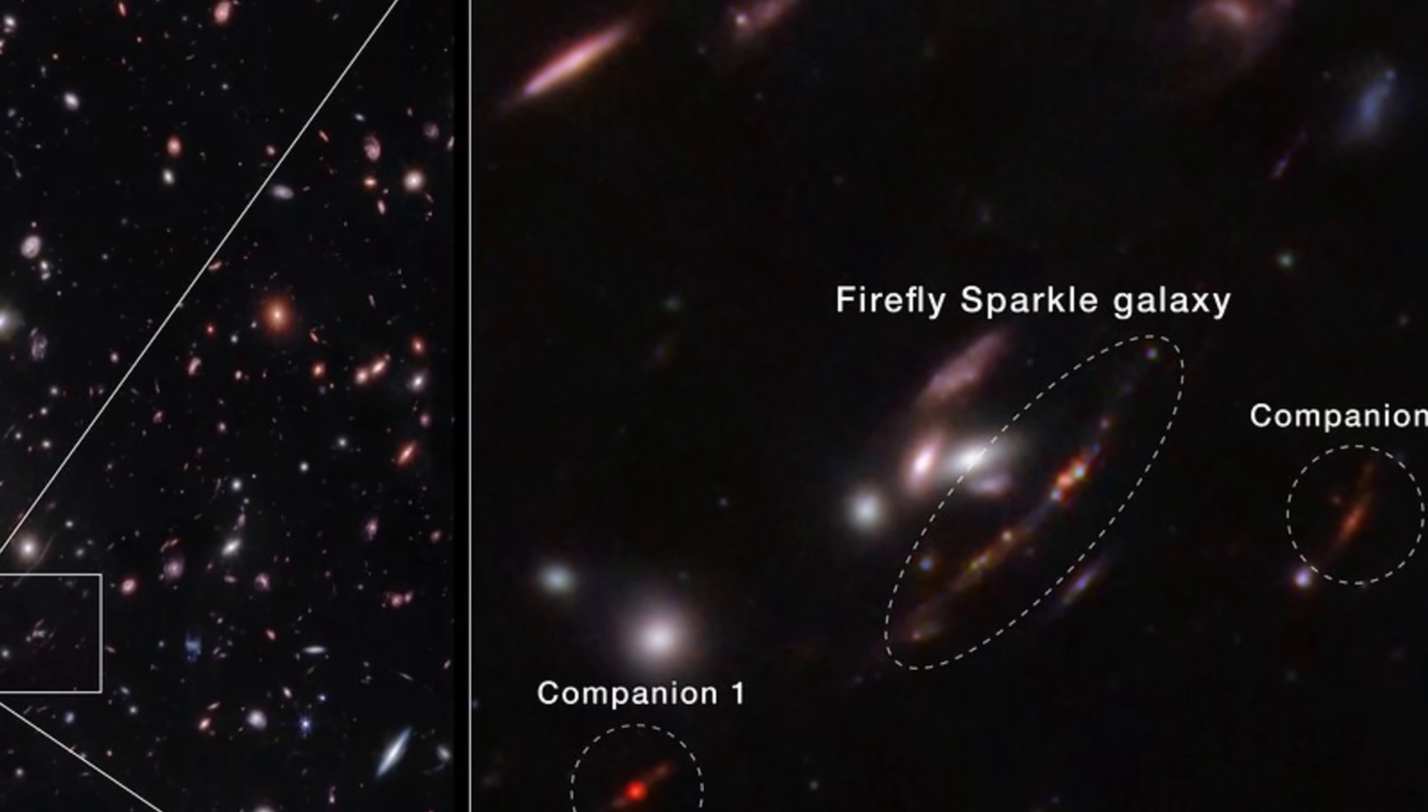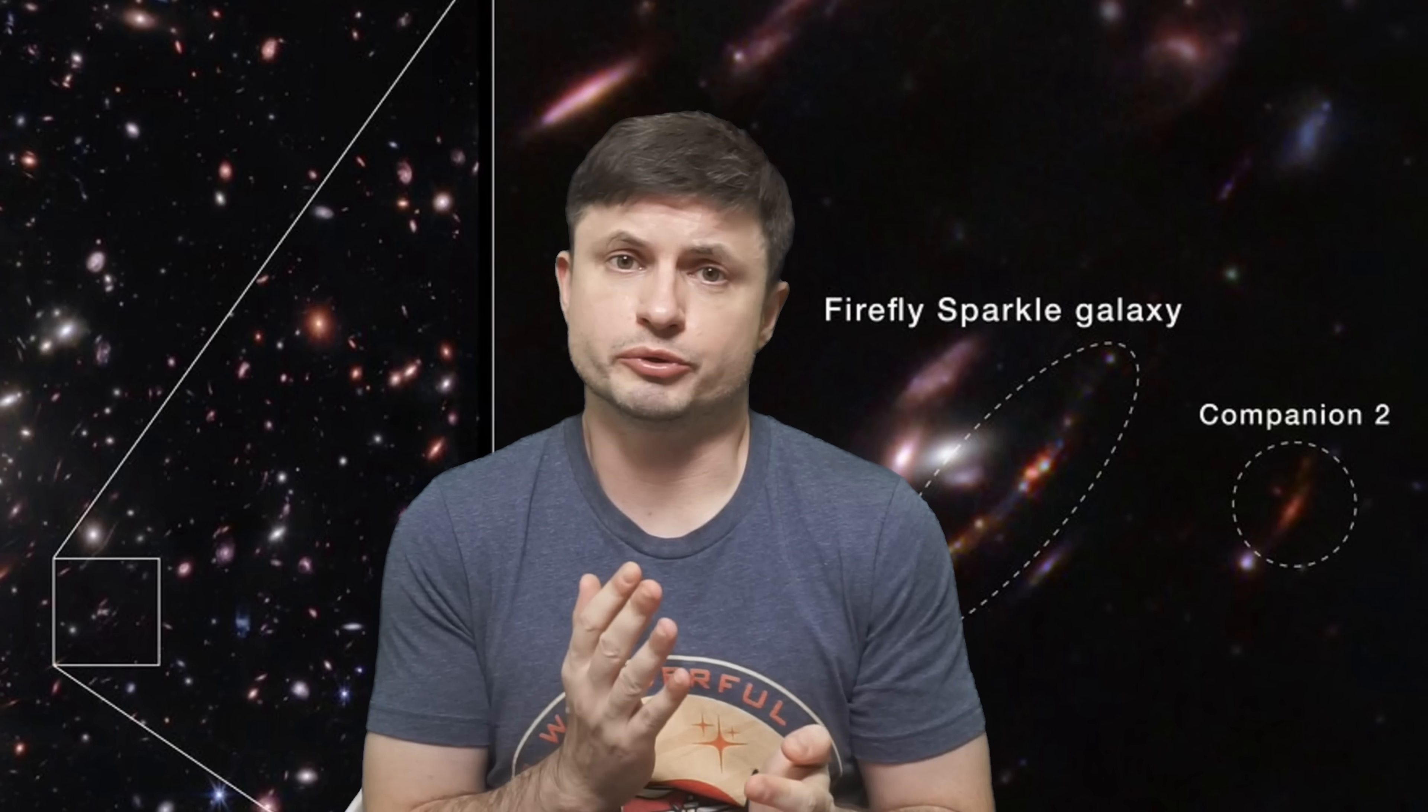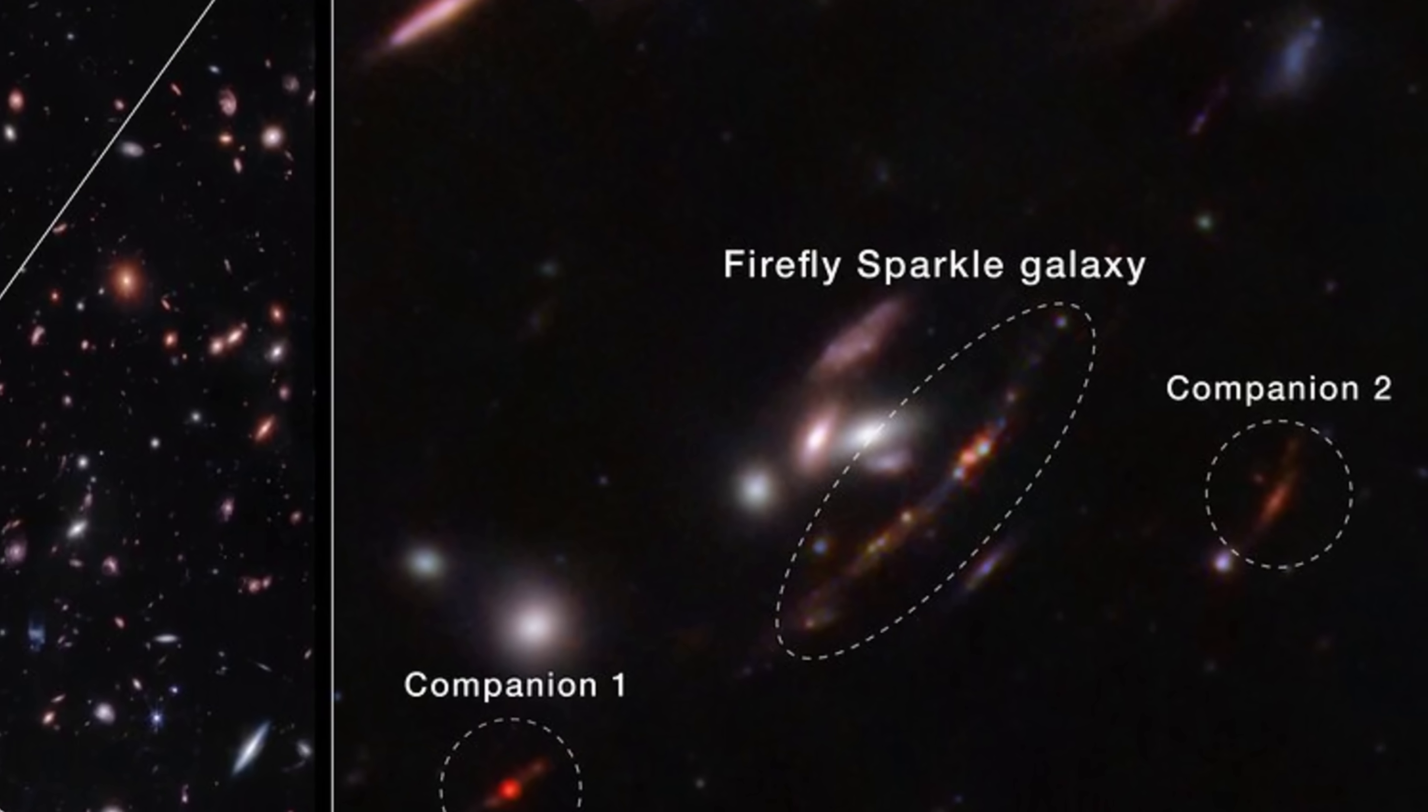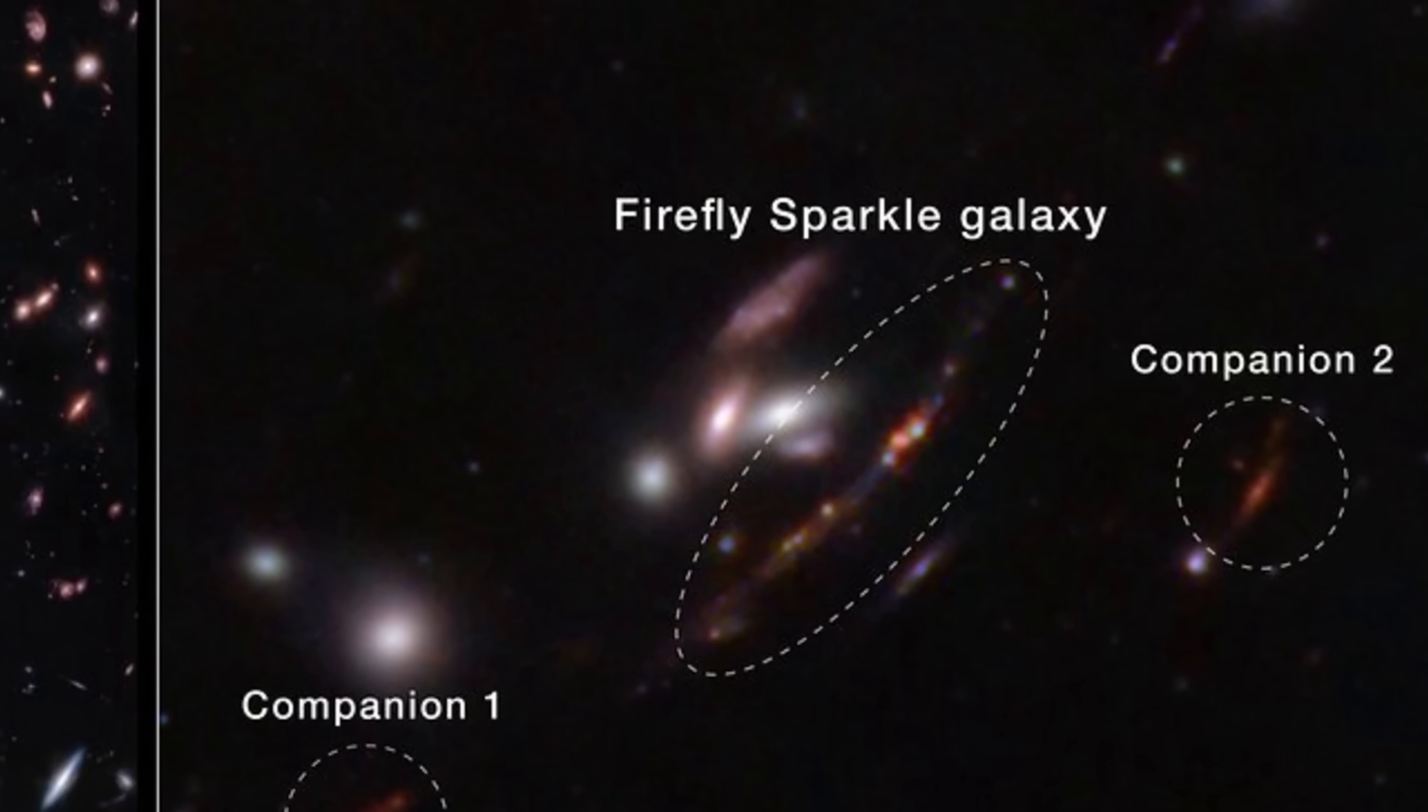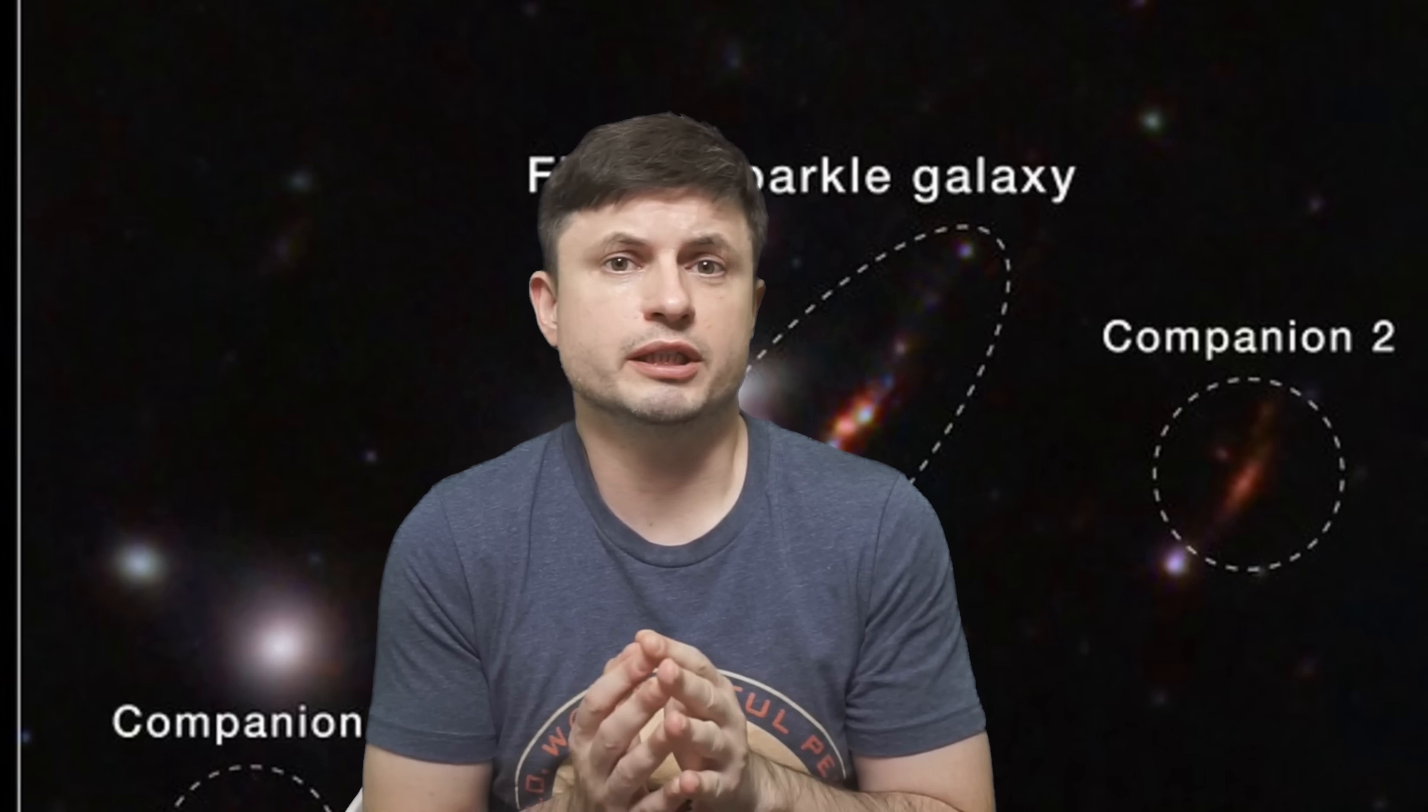But what makes this unusual galaxy, now referred to as the Firefly Sparkle, kind of exciting is the fact that this is the first time in history that we're able to observe individual tiny galactic parts as this early galaxy is being assembled. This allows astronomers to essentially reconstruct the overall shape of this galaxy, discovering individual differences in various parts and helping us visualize a galaxy that turns out might have been extremely similar to the early Milky Way.